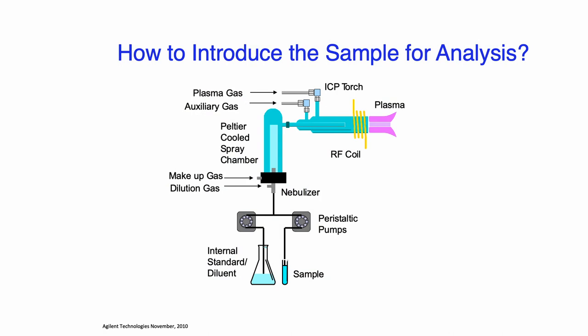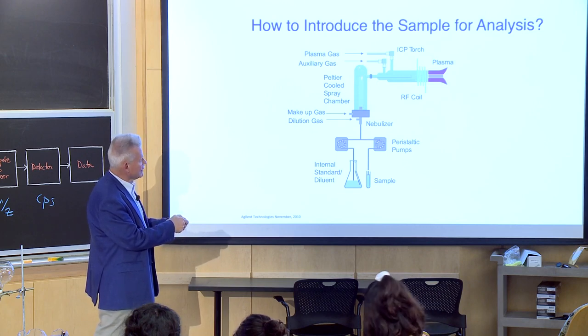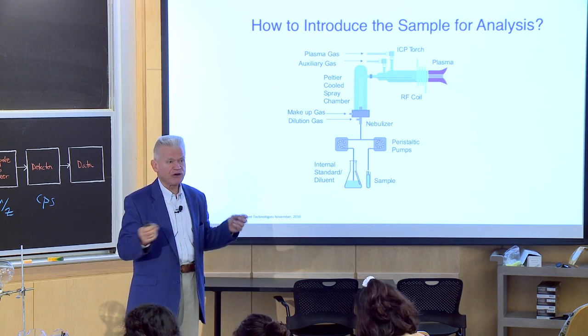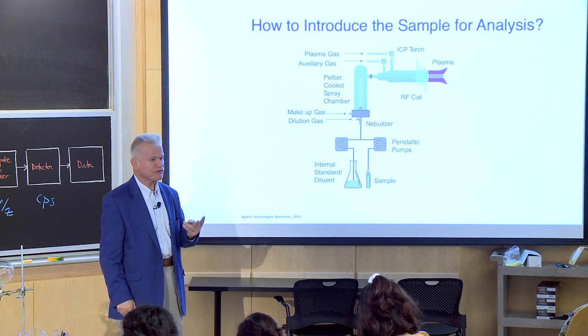Here's our liquid sample. A peristaltic pump pumps the liquid up to a nebulizer, which converts it into an aerosol. There's a dilution gas — argon — that dilutes the sample before it enters the spray chamber. Once the aerosol gets in there, there's a makeup gas, also argon, that pushes the droplets down to the bottom of the tube. They have to make two right turns to exit the ion source, and those two turns cause the larger droplets to be pumped out. So only about 2% of our original sample actually enters the ion source.